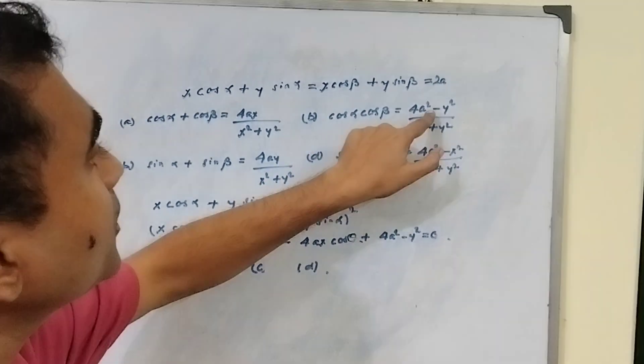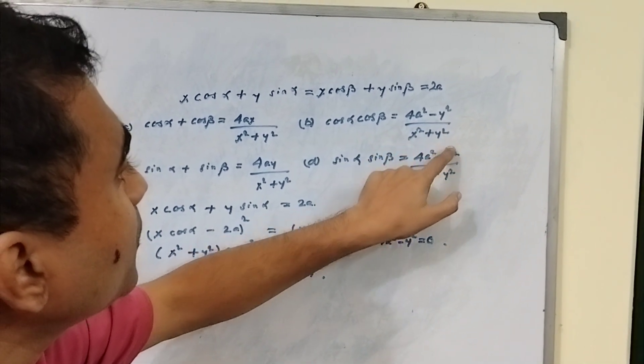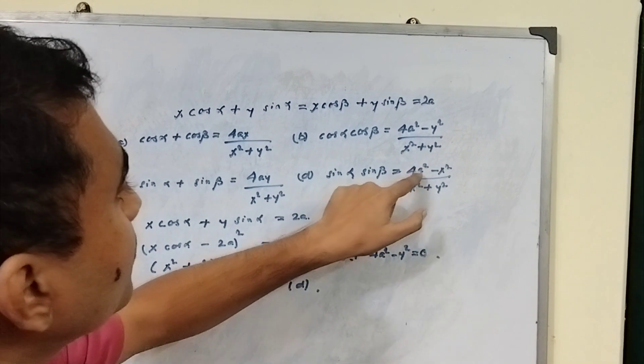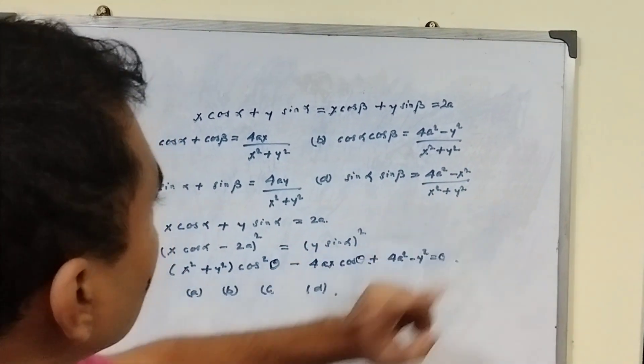Option (c) cos alpha cos beta is equal to 4a square minus y square by x square plus y square. Option (d) sin alpha sin beta is equal to 4a square minus x square by x square plus y square.